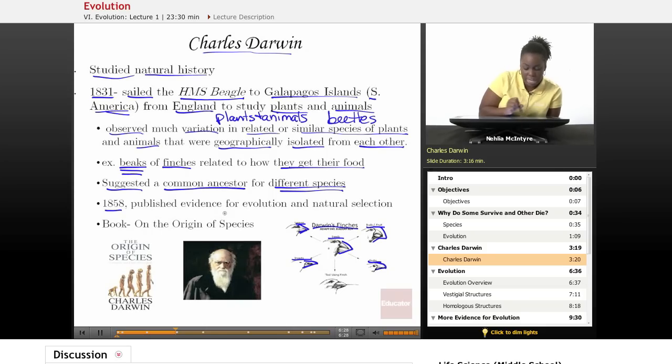And in 1858 he published evidence for evolution and for natural selection in a book called On the Origin of Species.